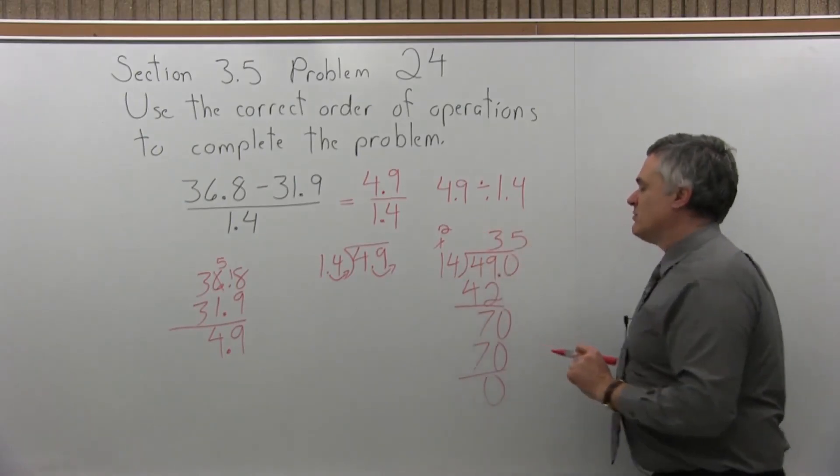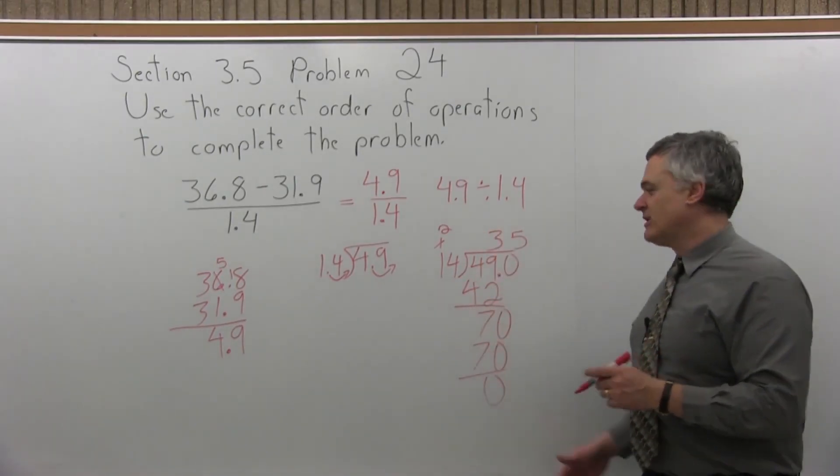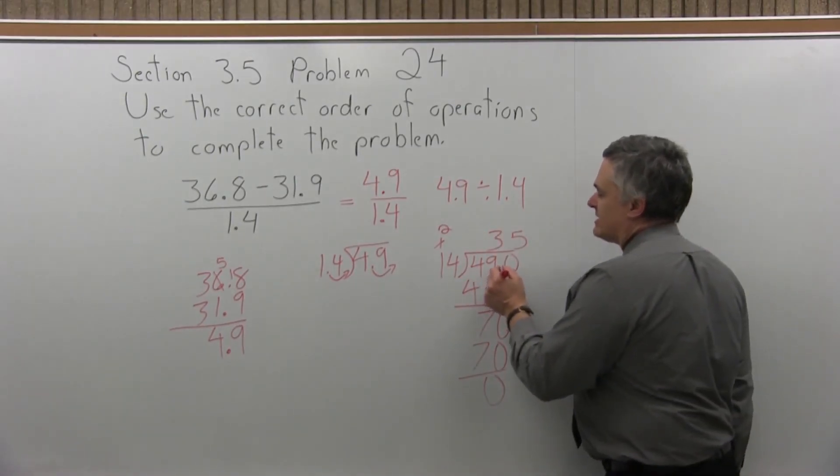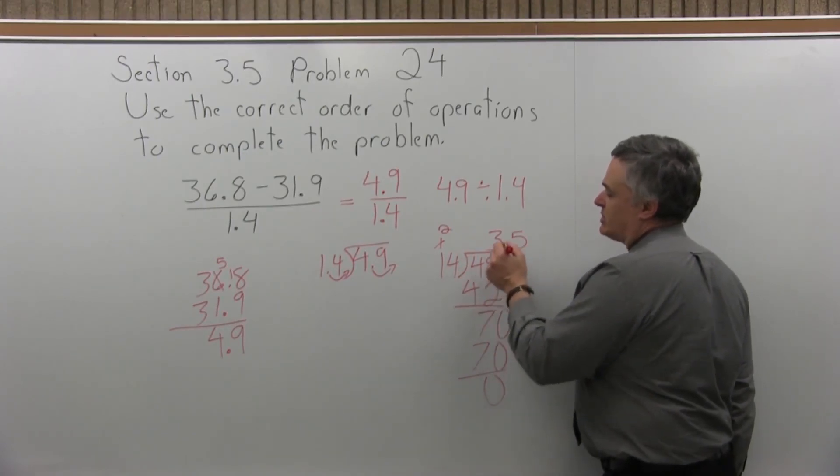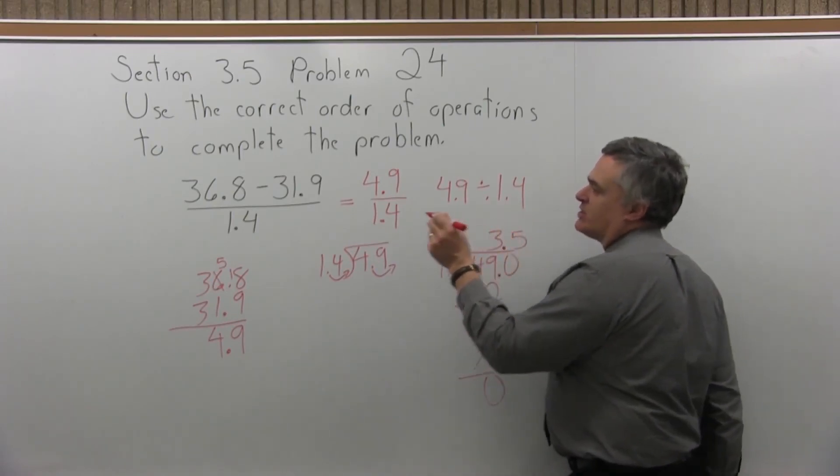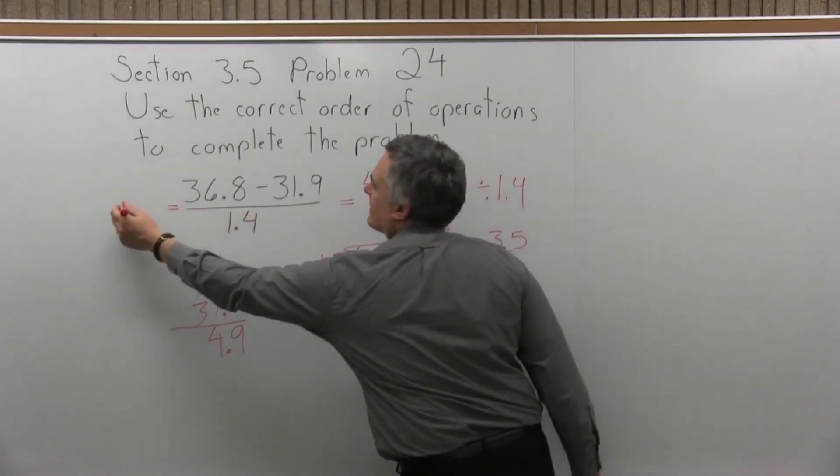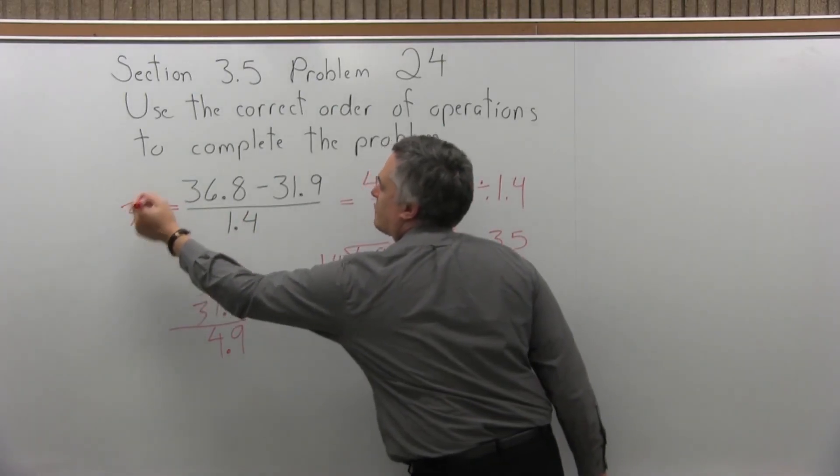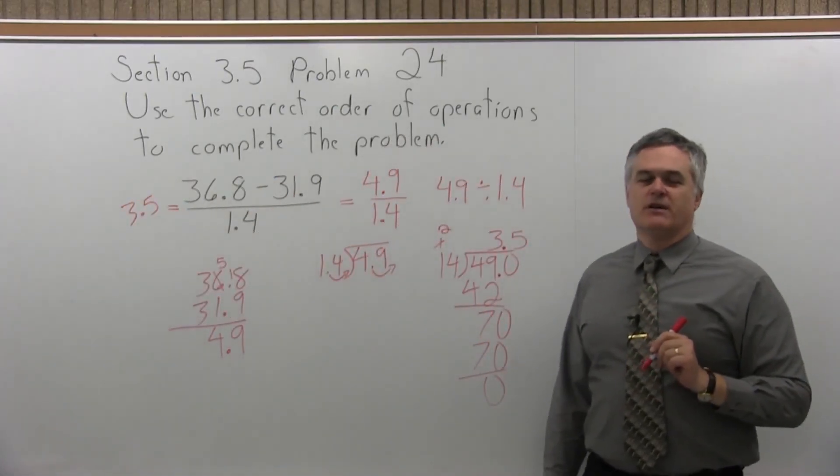Now notice, the way this answer is written, it looks like it says 35, but really that decimal has to come straight up from what's written in the number under the division symbol. So the answer is not 35, it's 3.5. So that whole original problem, doing the order of operations correctly, will give you a result of 3.5.